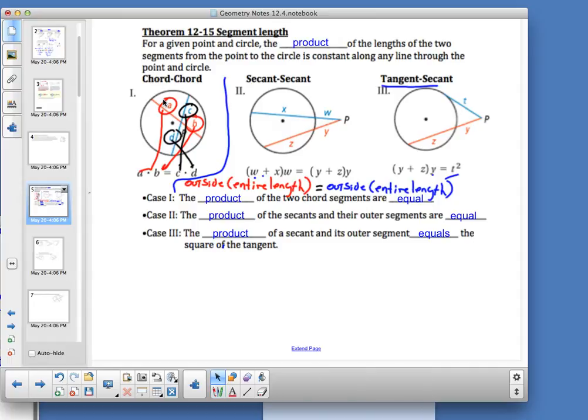Now secant, secant. A couple blind guys with really bad English skills, right? It's a bad joke.